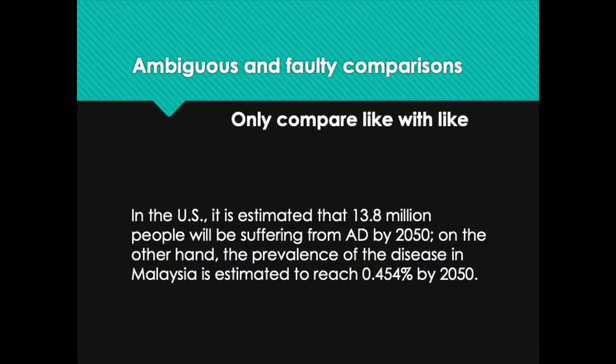A similar idea to parallel structure is the comparison. We want to make sure that we avoid faulty comparisons or incomplete comparisons. For faulty or ambiguous comparisons, make sure you only compare like with like. Here's an example: in the US, it is estimated that 13.8 million people will be suffering from AD by 2050. On the other hand, the prevalence of the disease in Malaysia is estimated to reach 0.54% by 2050.